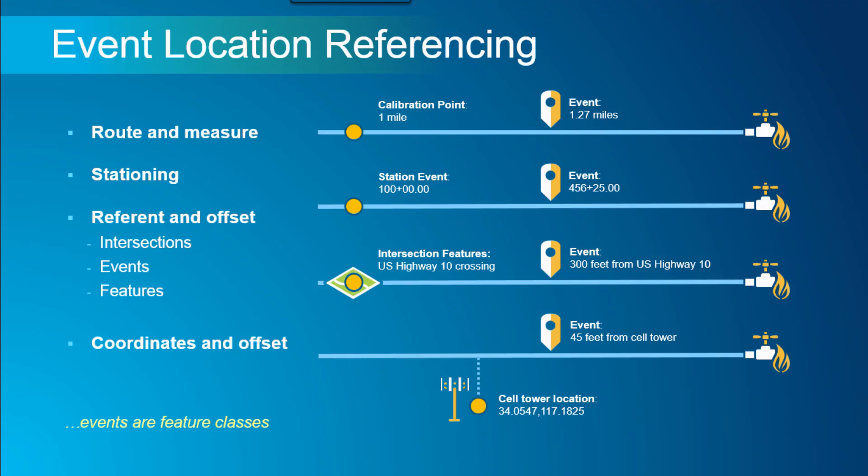Events in Pipeline Referencing are feature classes. We support two types of events: a point event — which could be anything like a pipe fitting or a valve — and a linear event, such as the operating pressure under which your pipeline is running. We support both point events and line events, and events are simply your feature classes.